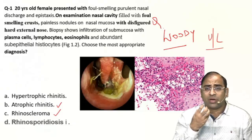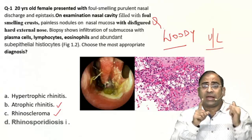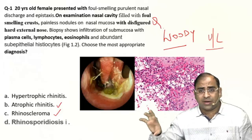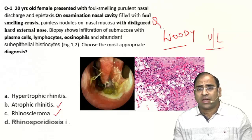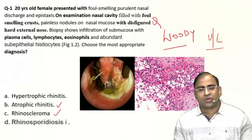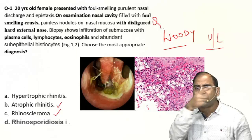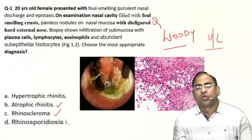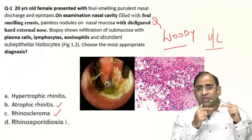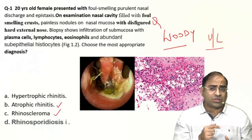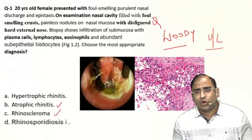For rhinosporiosis, the examiner will clearly mention a polypodial mass — a red polypodial mass coming out of the nasal cavity. Clear demarcation: mulberry-like nasal mucosa is hypertrophic rhinitis; if they use the word 'polypodial mass coming out of the nose' or 'reddish mass,' we go in favor of rhinosporiosis. Options A and D are close differentials; the mucosa will be hypertrophic in one, but in rhinosporiosis there is a red polypodial mass.